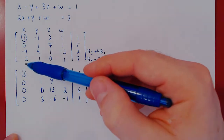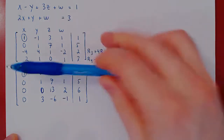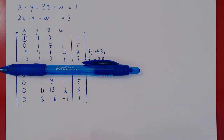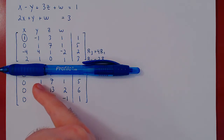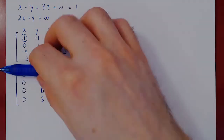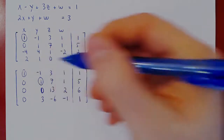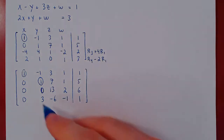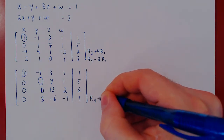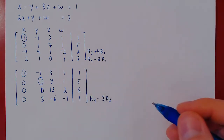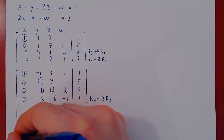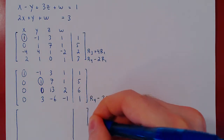So we have our leading one in the leftmost column top row. We've killed the entries below. We ignore it and we repeat. Starting from the leftmost column, all the entries here are zero — we can't have a leading one. Second column: there are two non-zero entries and we already have a one in the top row, so we're good to go. We have for free our second leading one. Let's kill the entries below it. We will do row four minus three times row two. We can recopy the first three rows as we're not changing them.